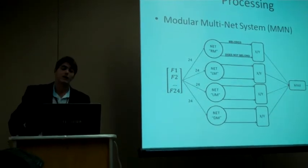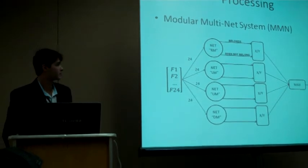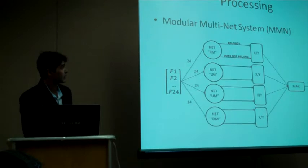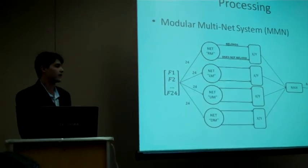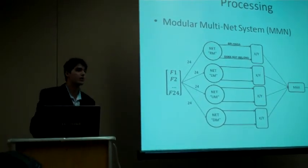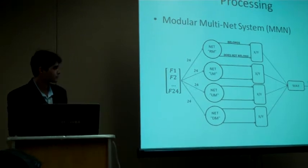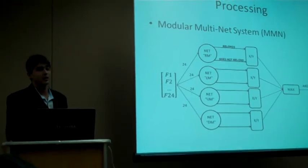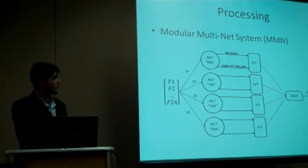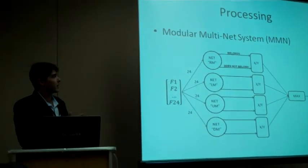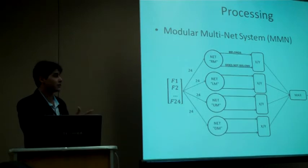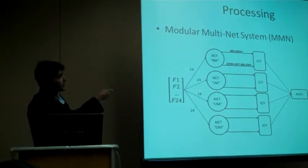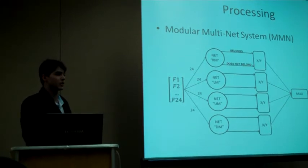The second model is what I call the modular multinet system. We also have four neural networks. At this time, each neural network is trained to classify the pattern as belonging or not belonging to its respective group. When more than one neural network classifies the pattern as belonging to its group, the answer is obtained by computing the highest value of the ratio between the belongs and the does not belong output from each neural network.